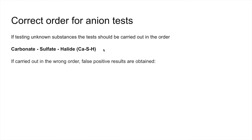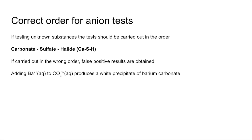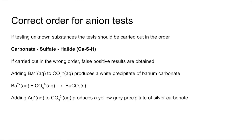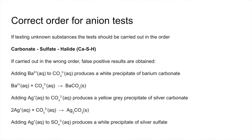The reason for this order is to avoid false positive results. If you add barium ions to carbonate ions — i.e., you carry out the sulfate test but there are carbonate ions present — you'd get a white precipitate of barium carbonate, which you would incorrectly think was barium sulfate. If you added silver ions to carbonate ions, you'd get a yellow-gray precipitate of silver carbonate, and there's the ionic equation for that. And if you added silver ions to sulfate ions, you would get a white precipitate of silver sulfate, and there's the ionic equation for that.